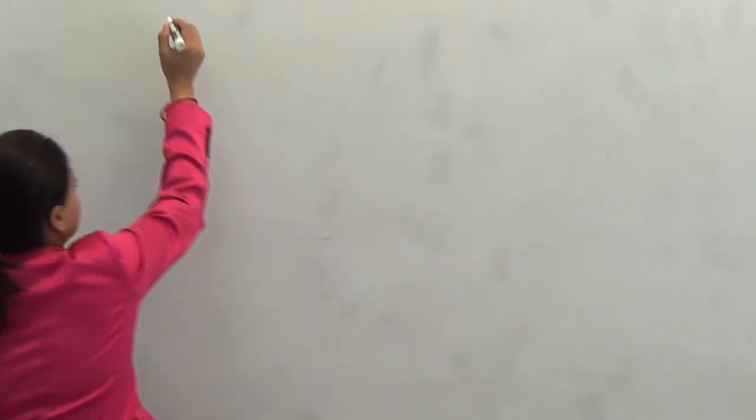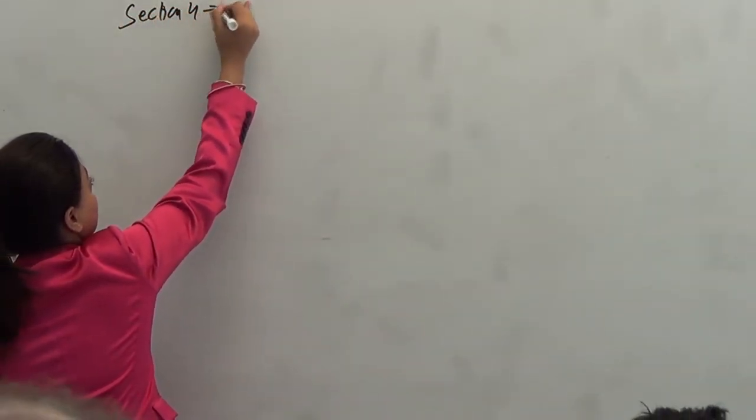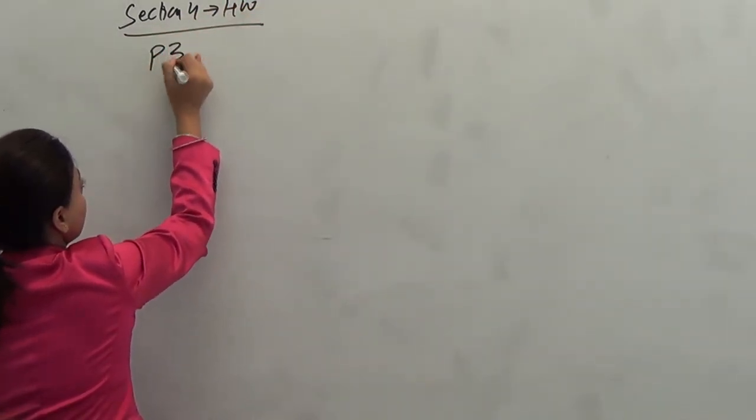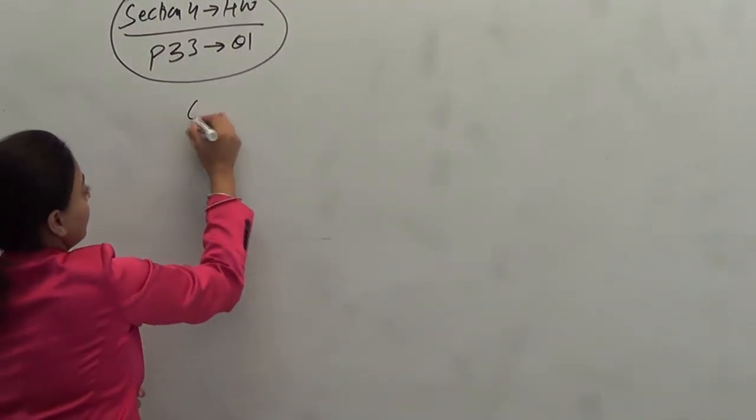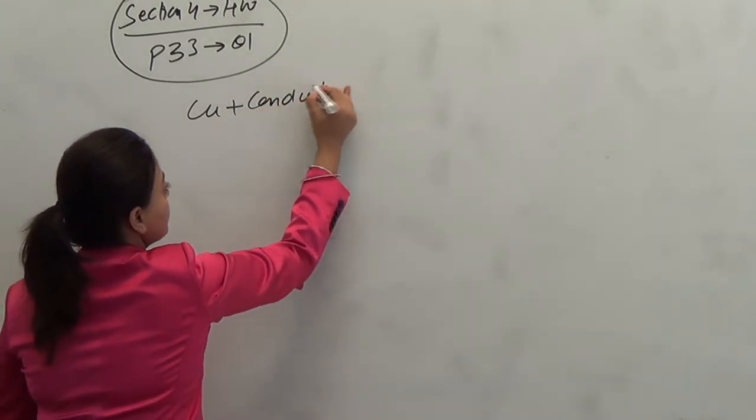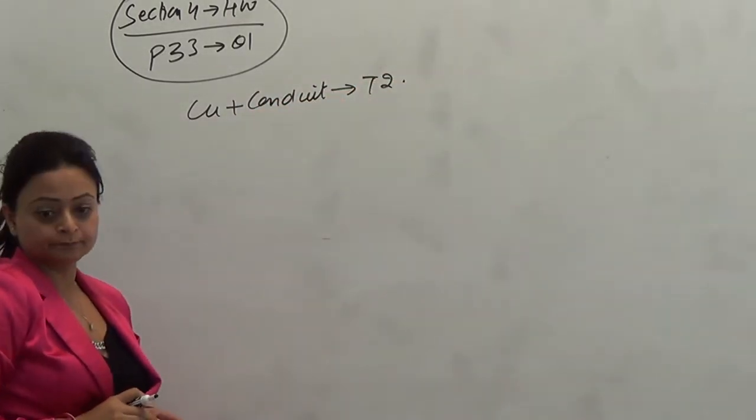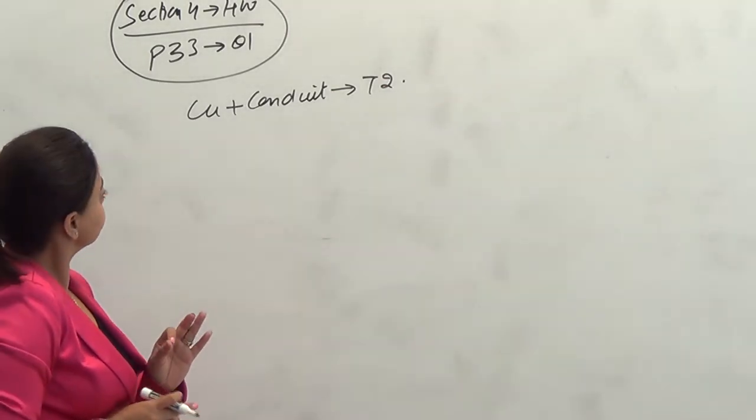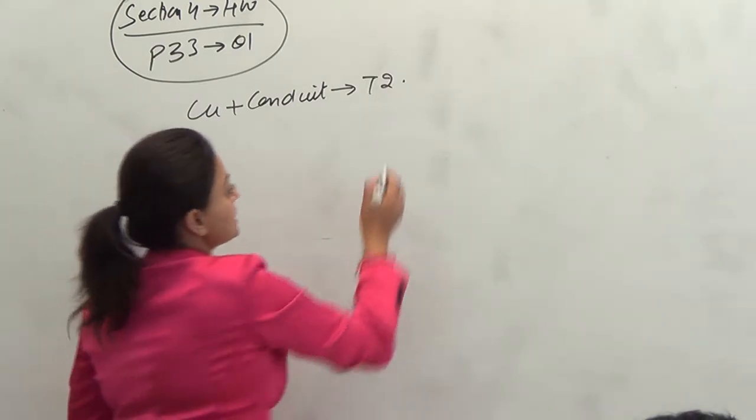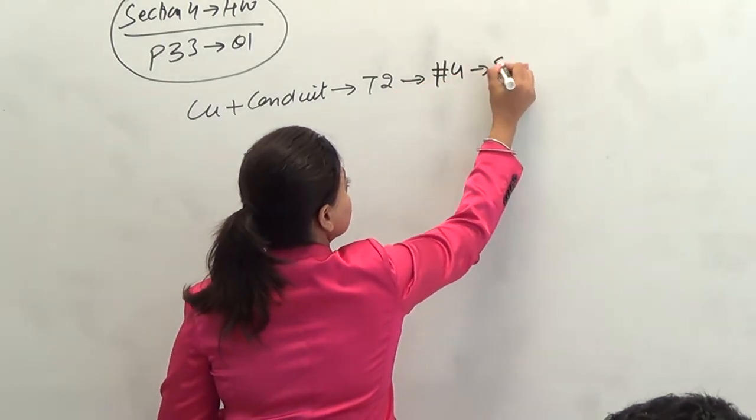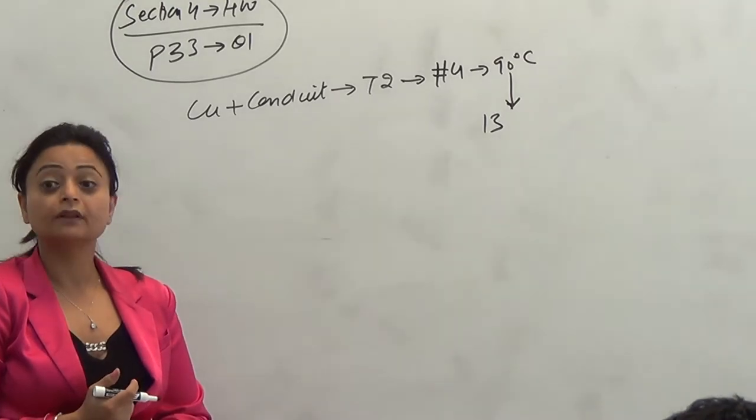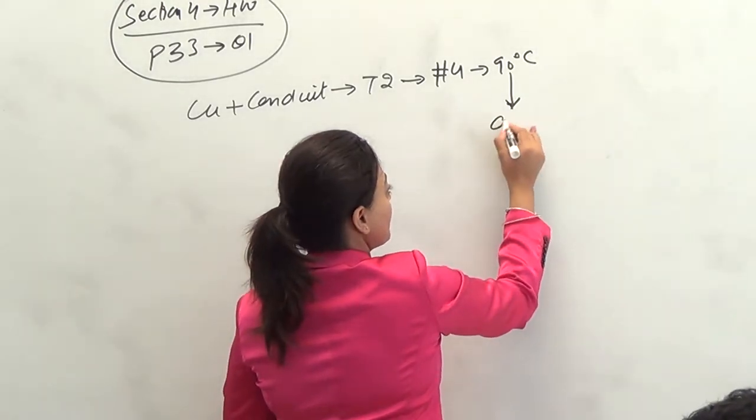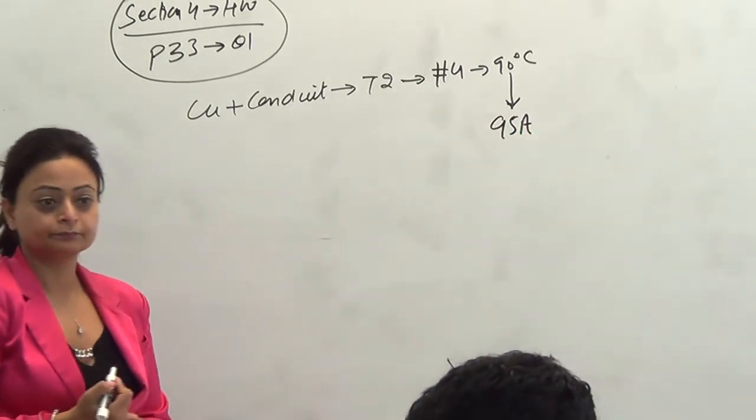How we're gonna do this? Let's do this together. If the ambient was not mentioned, we will assume 30. But because ambient is given, we gotta go one more step after finishing Table 2 and Table 5C. So, you guys are gonna do this with me. By the way guys, we are on section 4 homework, page 33, question number 1. We are given copper in a conduit, so we know we are gonna go to Table 2. And Table 2 for number 4, 90 degrees C rated. What's my answer? 95 amps. On Table 2.